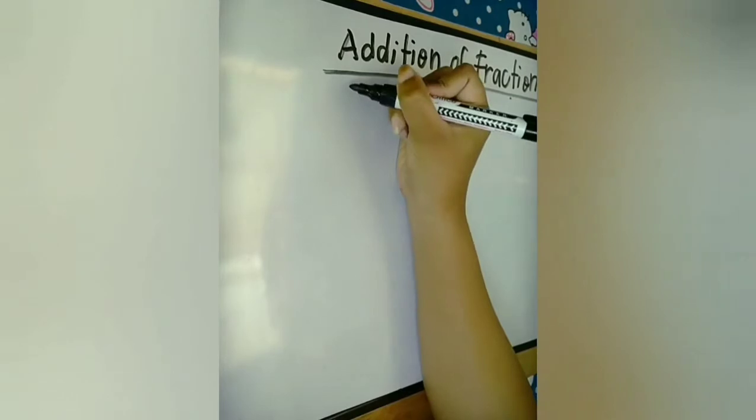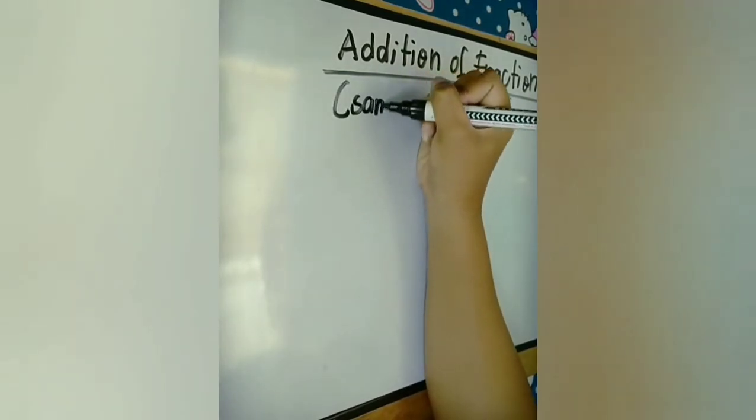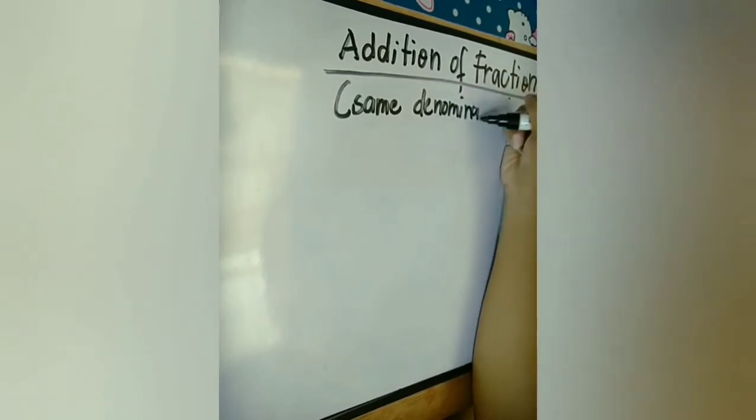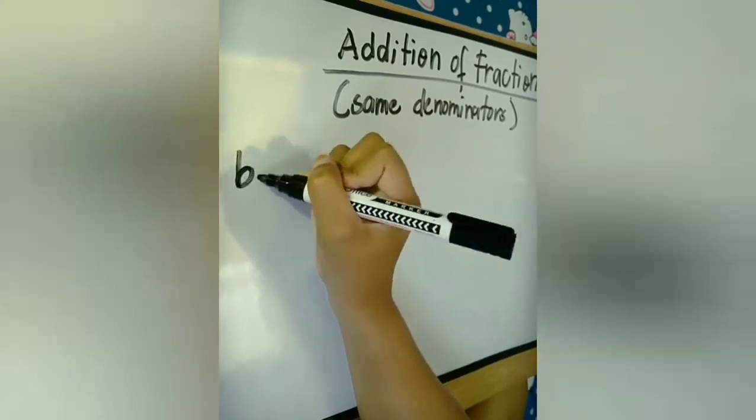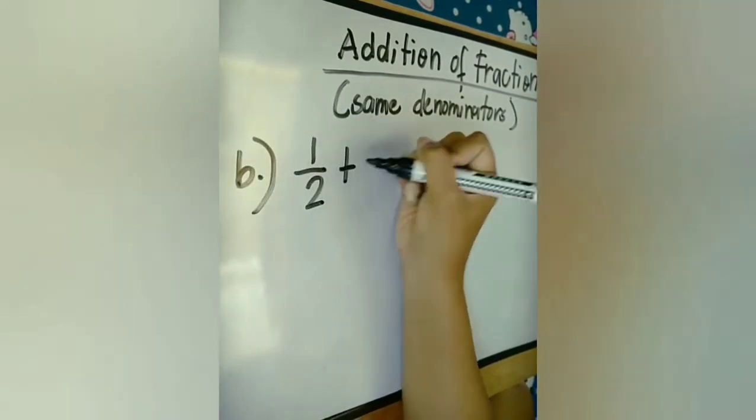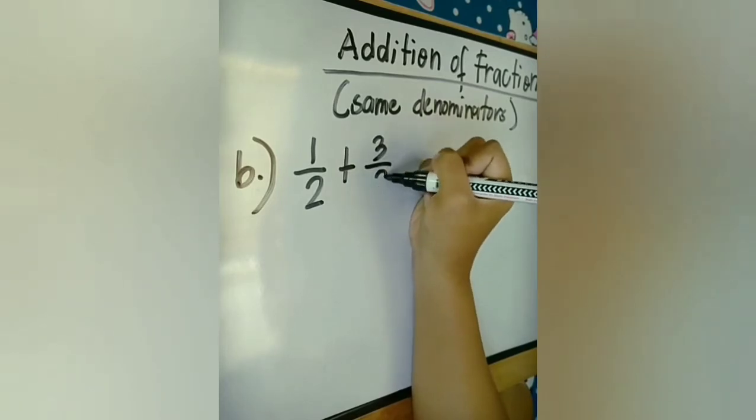Okay, so let's have more examples with the same denominators in addition of fraction. So, let's have example letter B. Example letter B is 1 half plus 3 half.